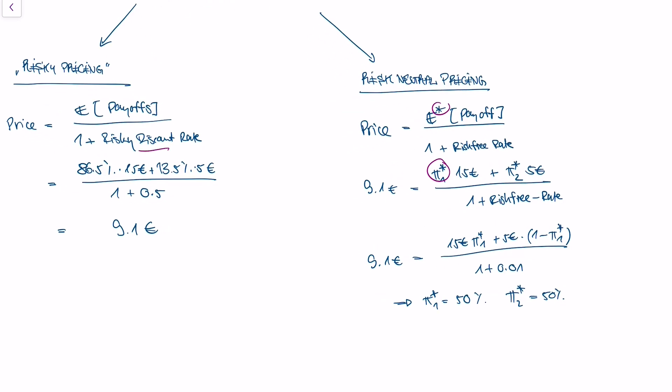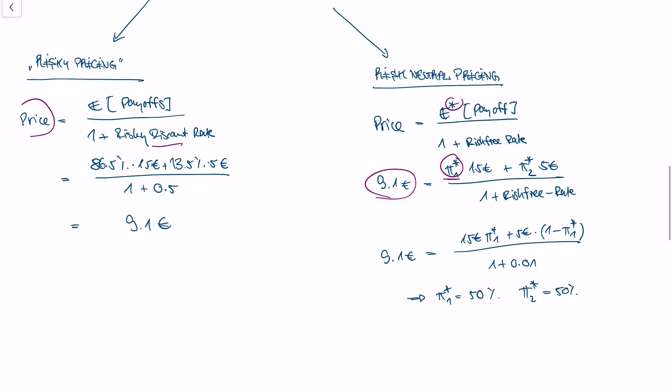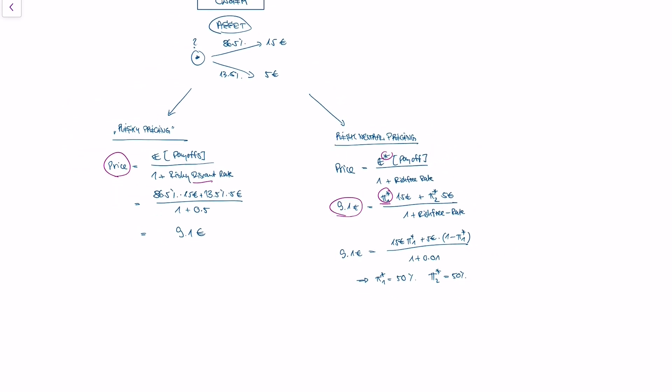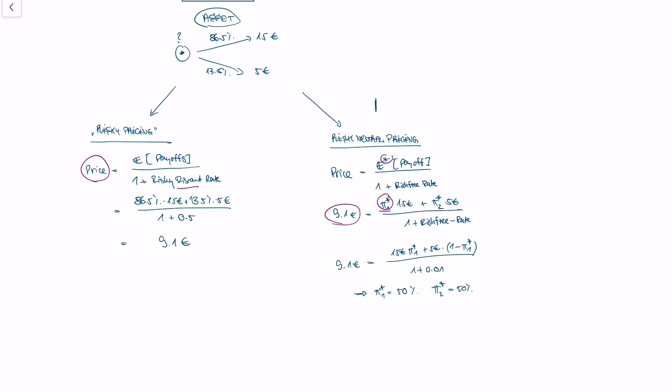Whenever we want to price an asset, we use the approach that is more suitable for a setting. And in the Black-Scholes model derivation, we will actually use the risk neutral approach to pricing.